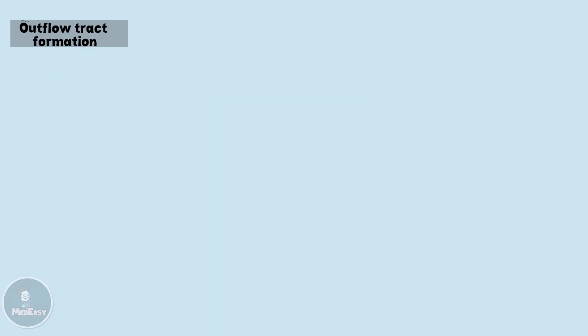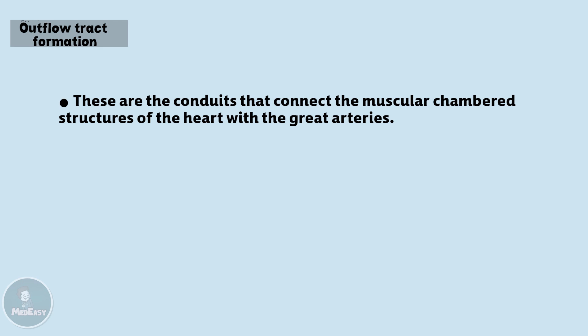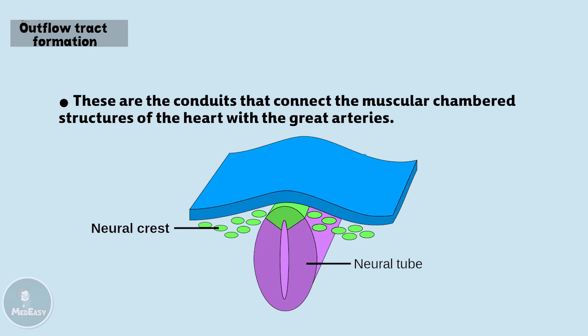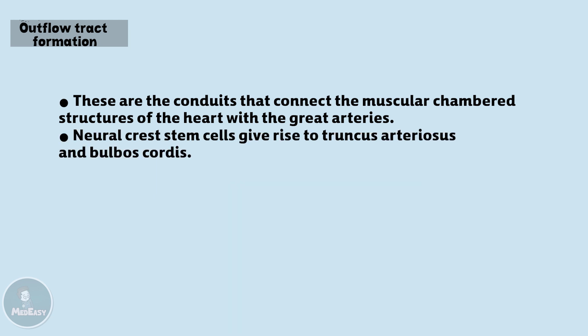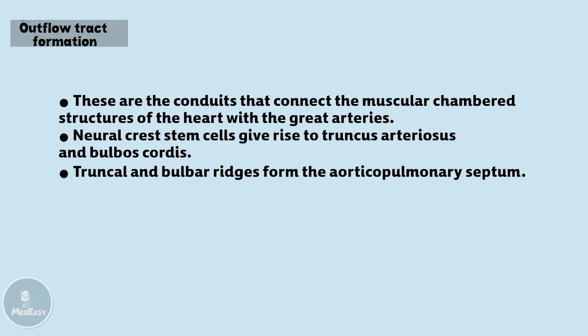The outflow tracts of the heart are basically the conduits or passages that connect the muscular chambers of the heart with the great arteries — the aorta and the pulmonary artery. These tracts are formed by cells called neural crest cells, which are multipotent stem cells that develop on the side of the neural tube in the early embryo and can migrate to the heart, giving rise to many structures including the truncus arteriosus and bulbus cordis. A ridge-like thickening called the truncal and bulbar ridges will form the aorticopulmonary septum, which will also be the membranous portion of the interventricular septum and will divide the truncus arteriosus into the aorta and pulmonary artery.